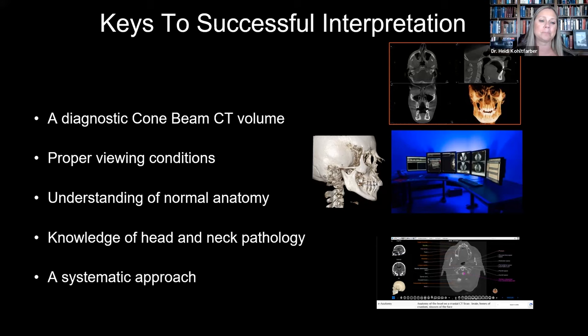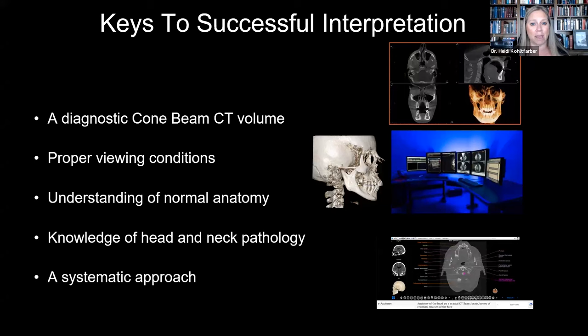We need to make sure there are no motion artifacts in the CBCT — that is number one. If there are motion artifacts, we're not going to be able to see the details we want. For endo, looking at the periodontal ligament spaces will be really difficult. If you're doing measurements for implant treatment planning, your measurements will be off. If you're sending it out for a surgical guide, the surgical guide may not fit.